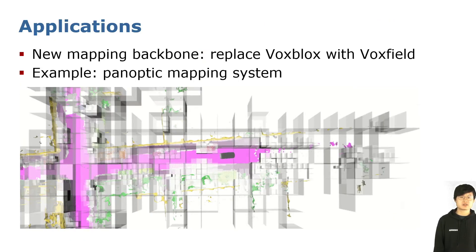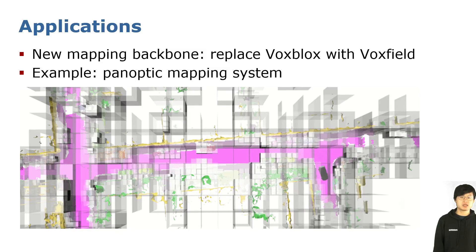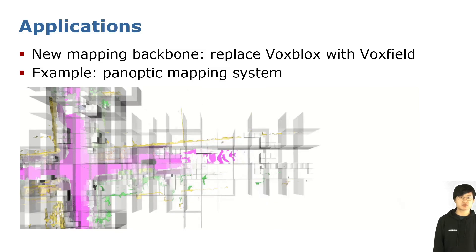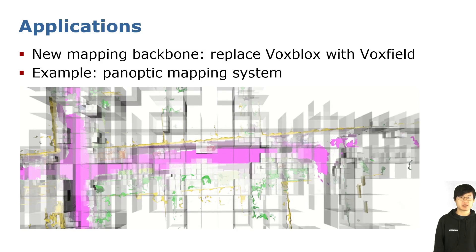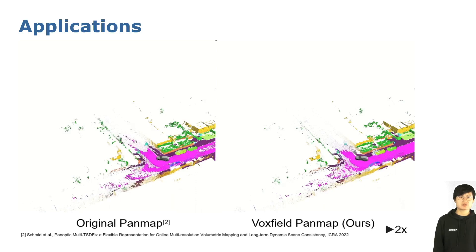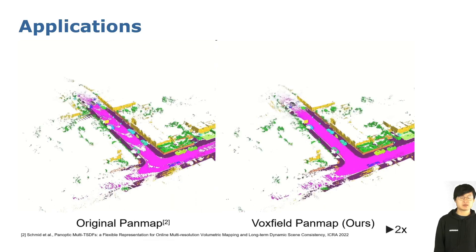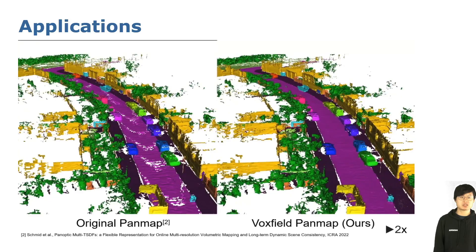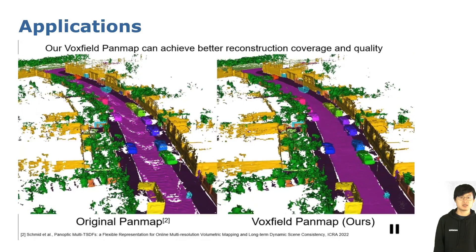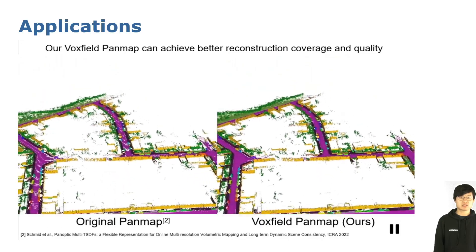For applications, one can use VoxField as the new mapping backbone and replace VoxBlocks with VoxField in high-level mapping systems, such as a multi-resolution panoptic mapping system. Each color represents the panoptic sub-map label containing instance-level semantic information. Our VoxField PanMap achieves better reconstruction quality and coverage than the original PanMap using VoxBlocks as its mapping backbone.